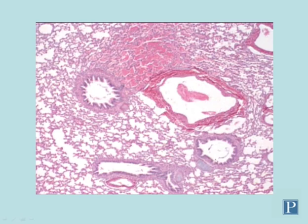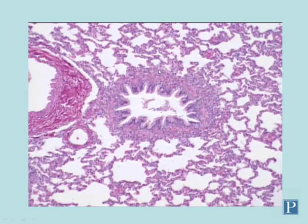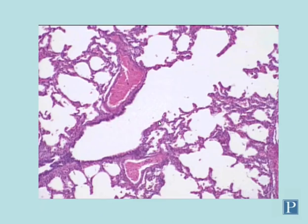Here's another bronchus, and another one down here. This is a blood vessel which appears to have ruptured, leaking blood into the pulmonary spaces. Here's another example of a bronchiole — notice the absence of hyaline cartilage.